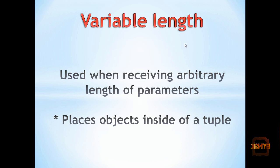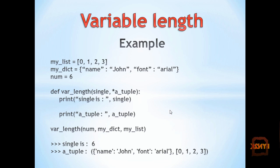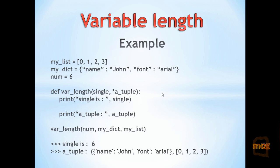Arguments can also be passed by variable length, which is used when receiving an arbitrary length of parameters. By using a star before the variable name in the parentheses, this will return all the rest of the parameters passed to it inside a tuple. We have my list equal to a list, a dictionary equal to a dictionary, and a number equal to a value. When we call the function, we are passing three objects — the value, then the two sets. Inside, we're printing off single, then the single, then a tuple. The star before the parameter inside the parentheses means the rest of the objects passed to the function will be collected inside a tuple, so we can operate on it.